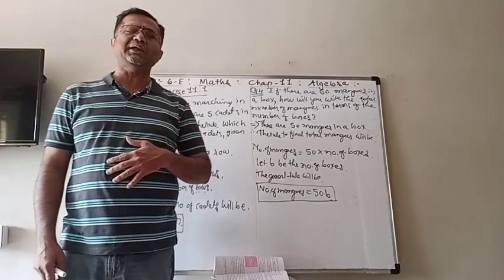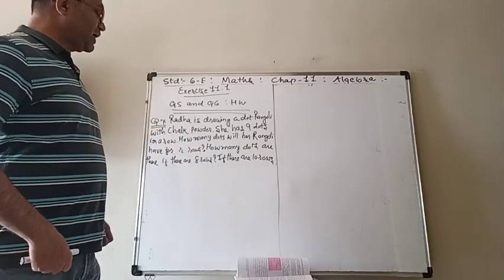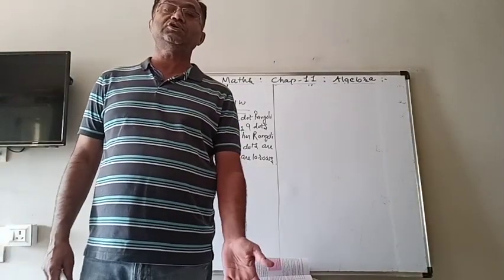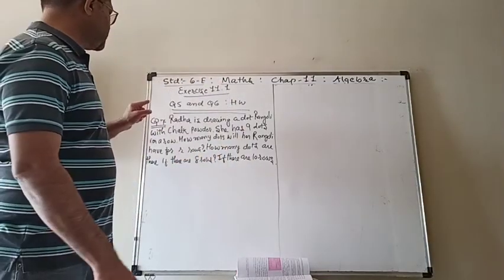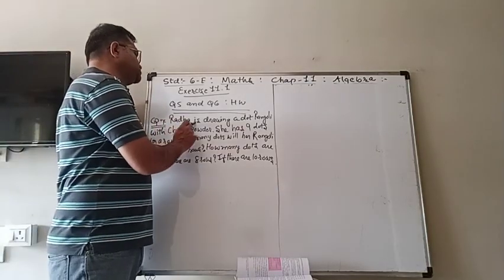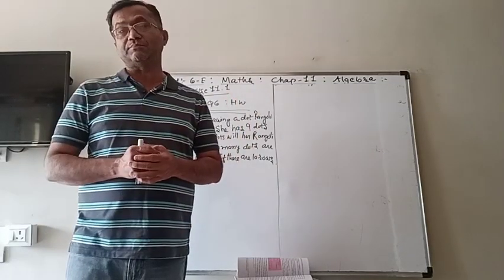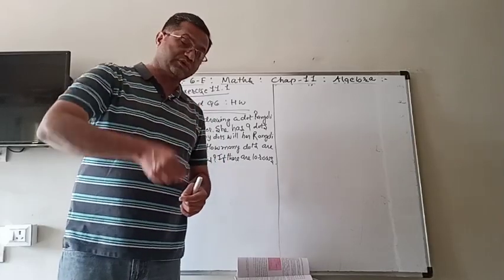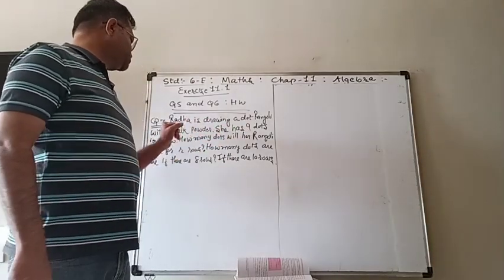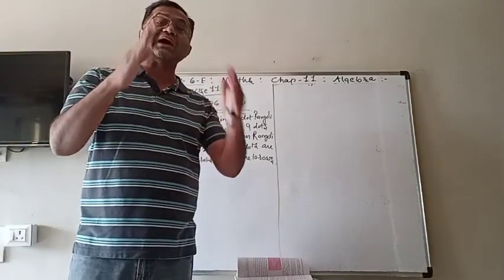So it is very simple to use the variable to write down the rule. Now questions 5 and 6 are very simple, so you can do them yourself for homework. Now let's take question number 7. It says that Radha is drawing a dot rangoli — those beautiful patterns we make generally during Diwali time, where we put dots in rows and by joining the dots we make beautiful patterns. She is using chalk powder.